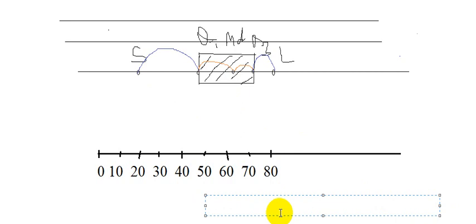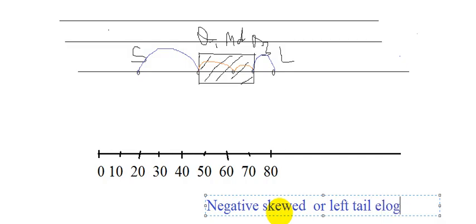The conclusion is that the distribution is negatively skewed, meaning it is left-tail elongated and negative. This is the conclusion regarding the nature of the frequency distribution.